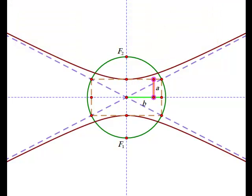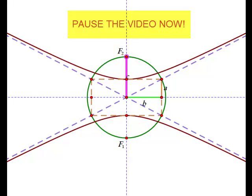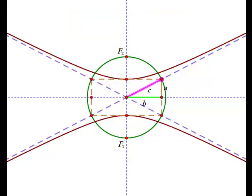Now pause the video. Looking at the diagram here, what do you notice about the relationship between A, B, and C? You're right. It's the Pythagorean theorem. A squared plus B squared equals C squared.